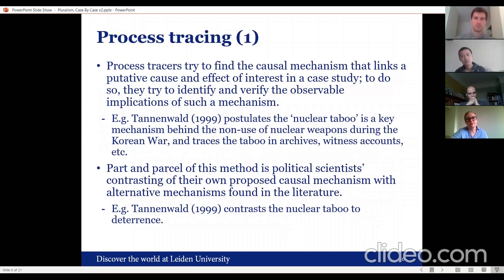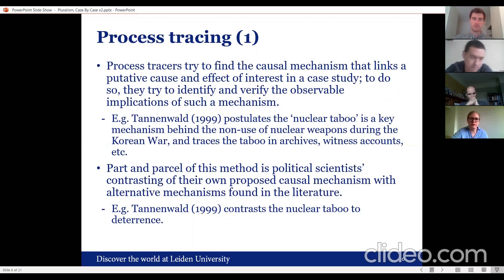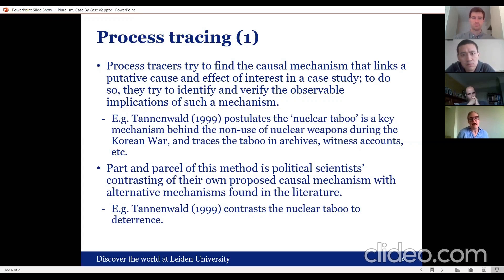What would I consider process tracing to be? Process tracers, in the most simple view, try to find the causal mechanism that links a putative cause and effect of interest in a case study, and to do so they try to identify and verify the observable implication of such a mechanism. As a simple example, Nina Tannenwald in her 1999 paper postulates that a nuclear taboo was a key mechanism behind non-use of nuclear weapons by the United States during several conflicts, including the Korean War, the Persian Gulf War, and the Vietnam War. She tries to trace the observable implications of that taboo — if this taboo is one of the reasons for non-use, what would we expect to see in archival sources or witness reports?